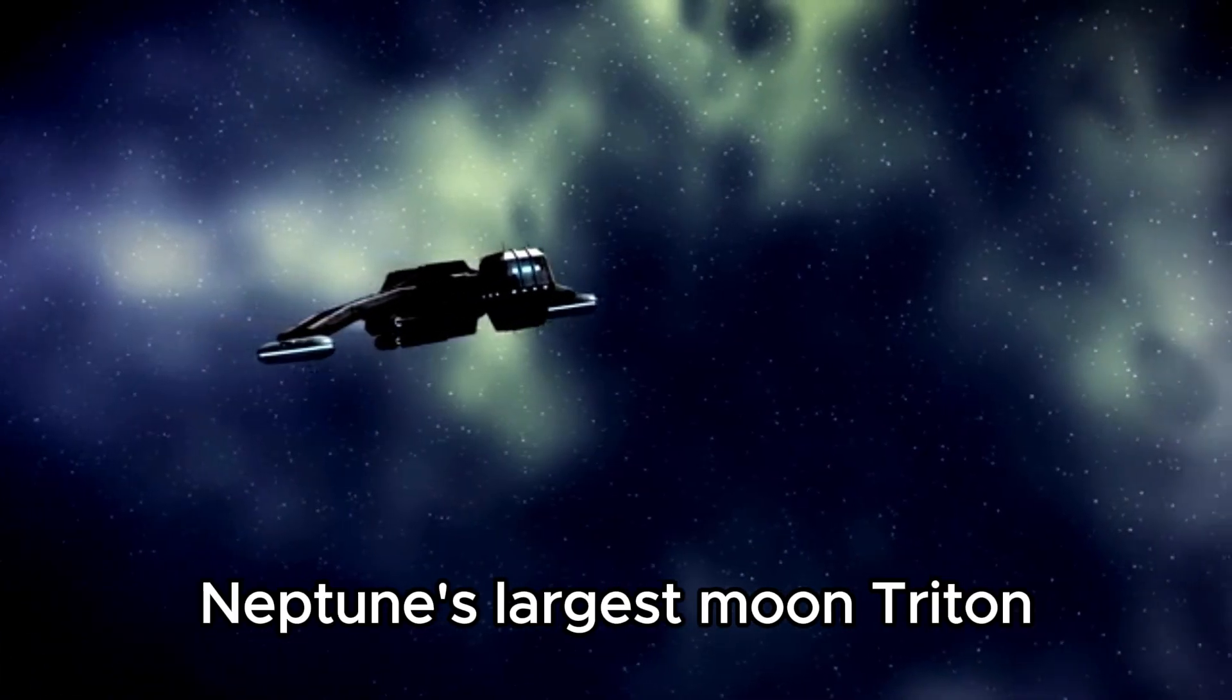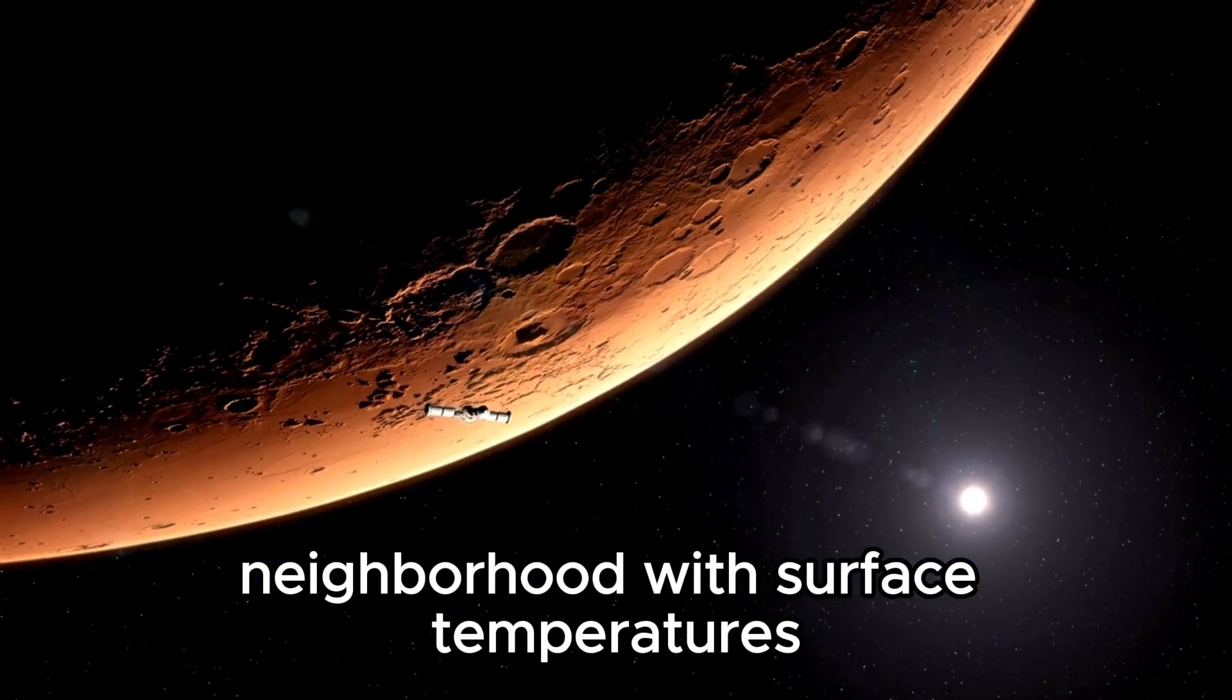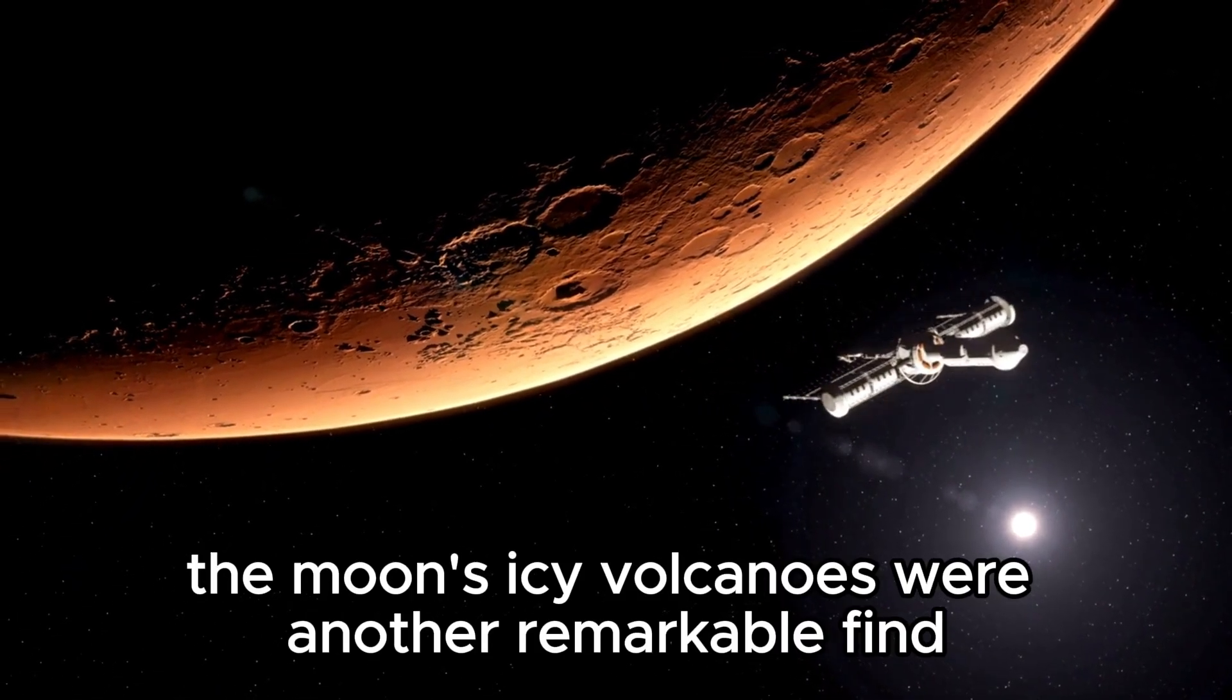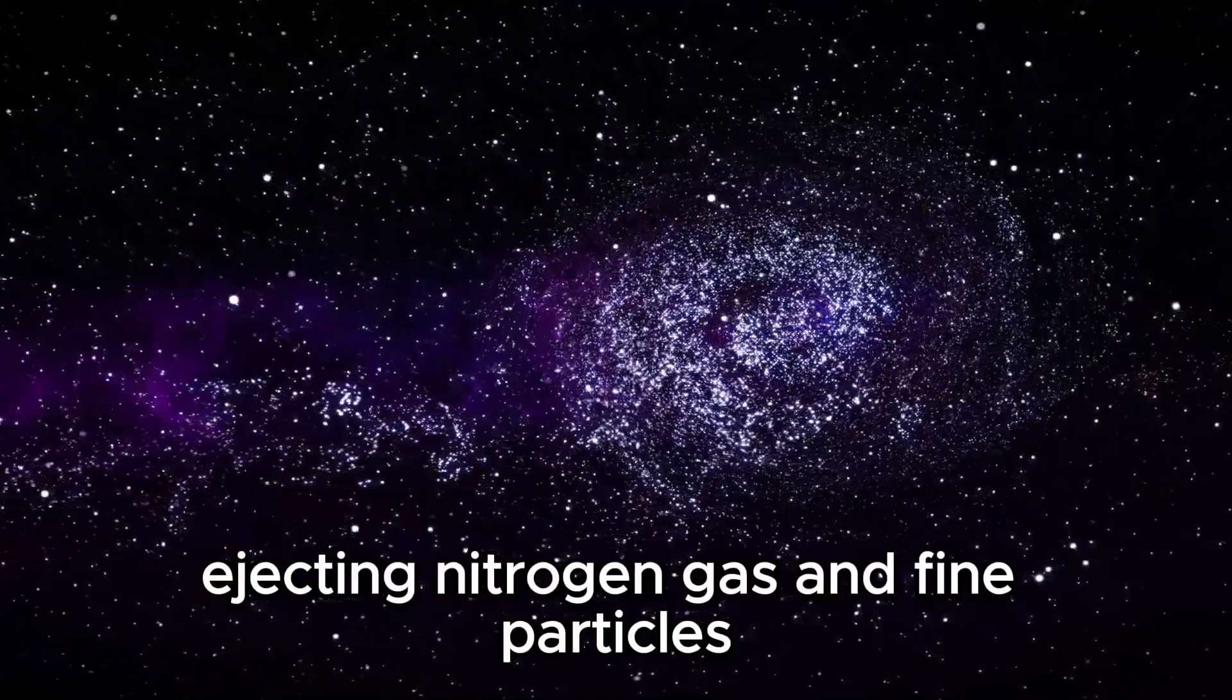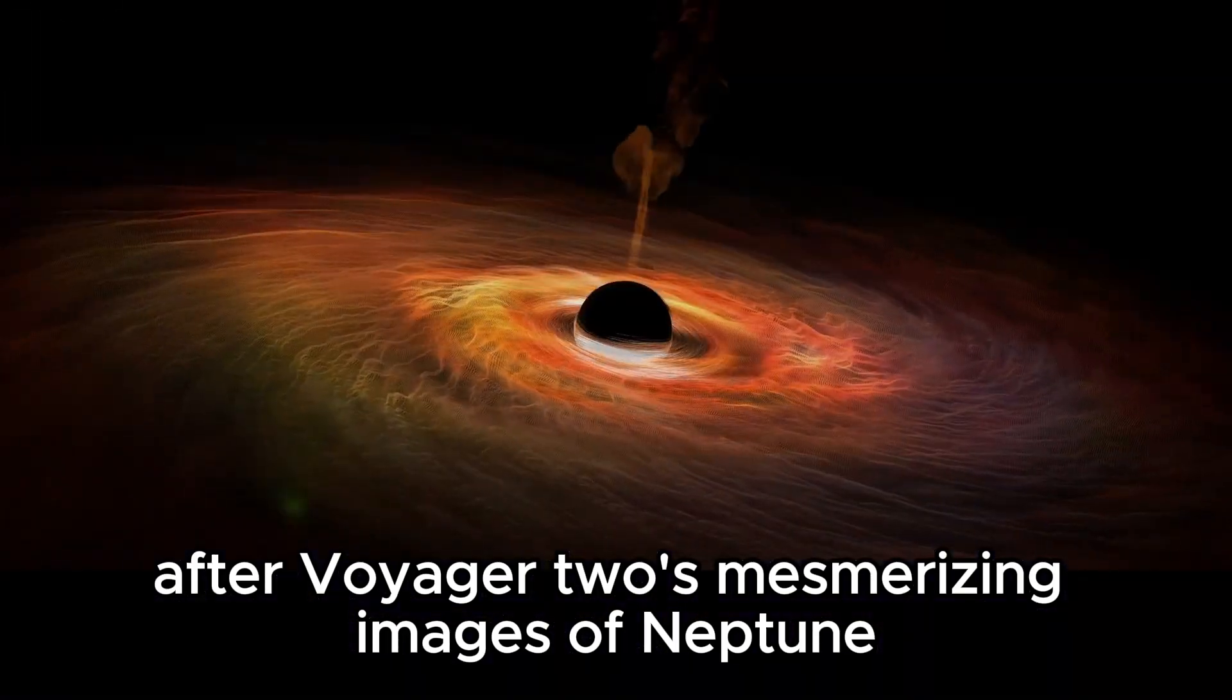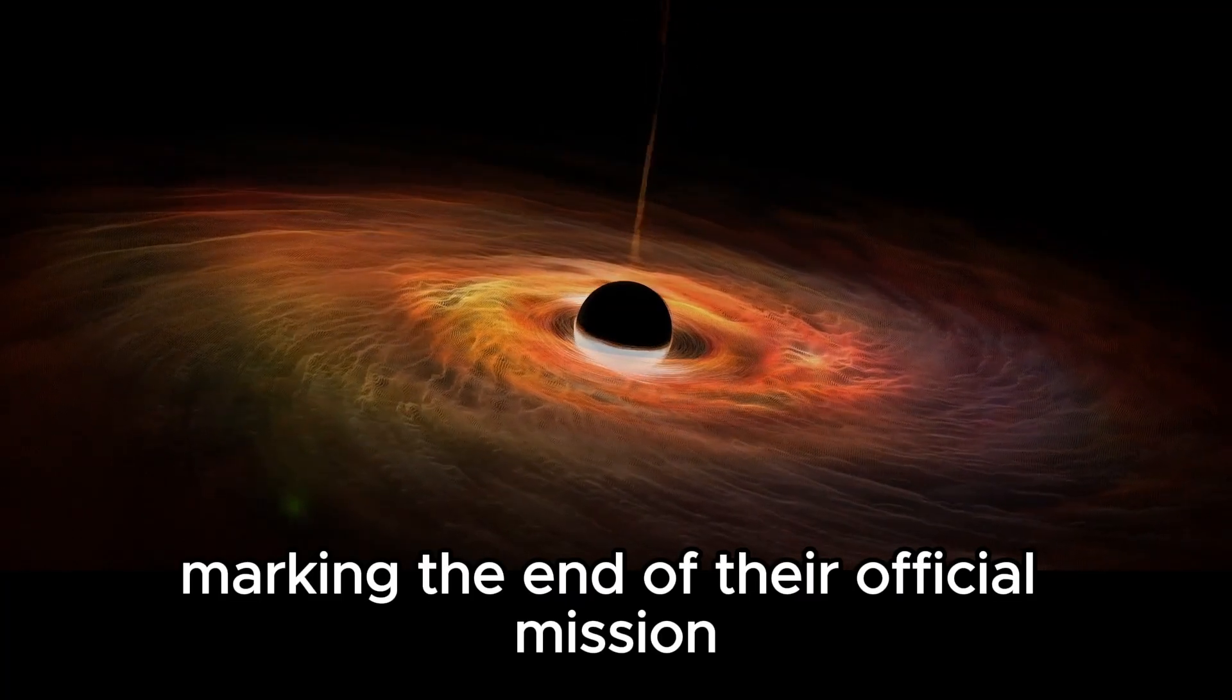Neptune's largest moon, Triton, turned out to be one of the coldest spots in our cosmic neighborhood, with surface temperatures plummeting to a staggering minus 235 degrees Celsius. The moon's icy volcanoes were another remarkable find, ejecting nitrogen gas and fine particles up to 5 miles into its atmosphere. After Voyager 2's mesmerizing images of Neptune and its moons, both spacecraft were scheduled to power down their cameras, marking the end of their official mission.